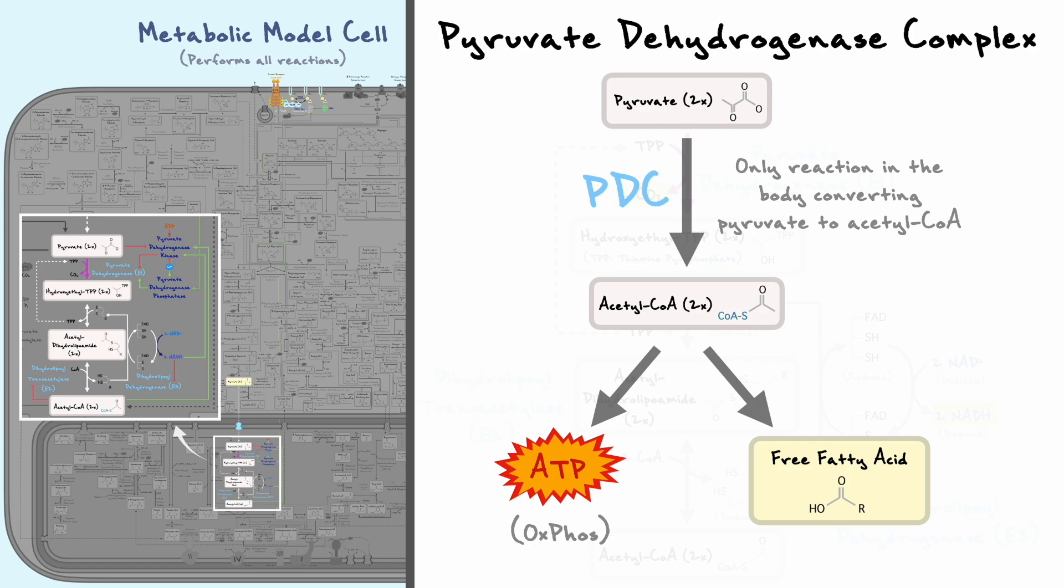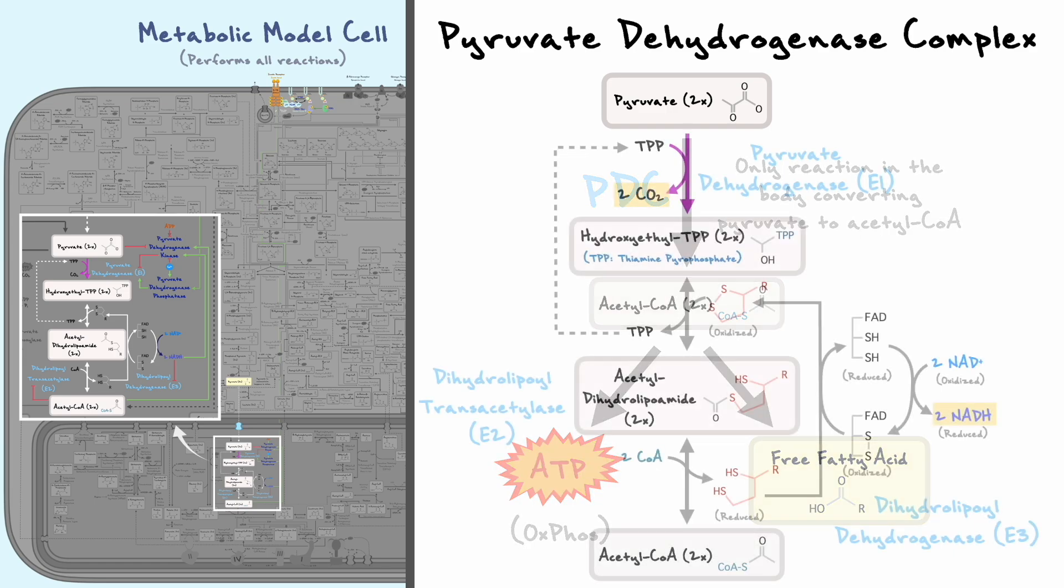In addition to that, we will see later that in conditions of high energy, acetyl-CoA can be used to start the synthesis of fatty acids. So because of this central role that acetyl-CoA plays in linking the degradation of carbohydrates to energy and synthesizing fat, it's crucial for the cell to regulate the output of the PDC. Accordingly, let's consider how this happens now.